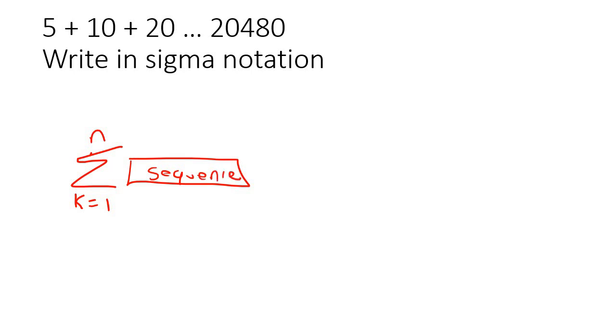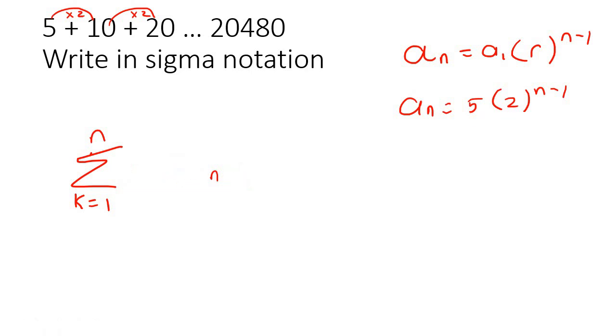So let's find that first. This is geometric. See how they're multiplying by 2? They're not adding, they're multiplying by 2. So we're going to use the geometric sequence formula, which is that one over there. a_1 is 5, r is 2, and then like that. Never multiply these two together because this n minus 1 is blocking. You can't multiply those together. So that's our sequence.